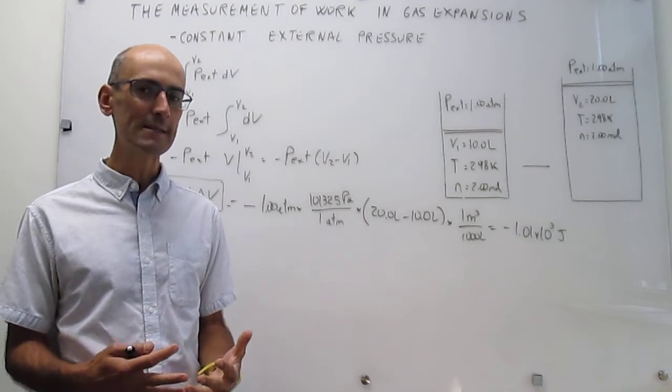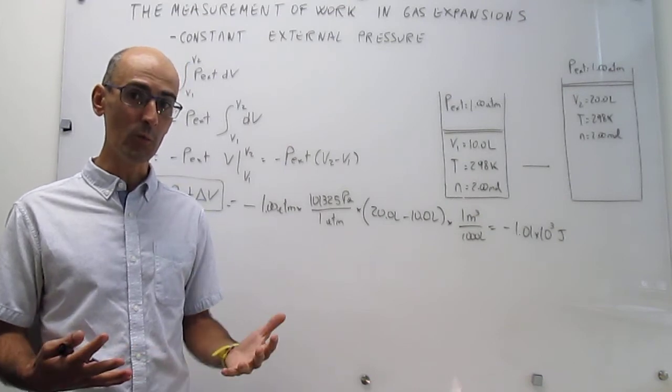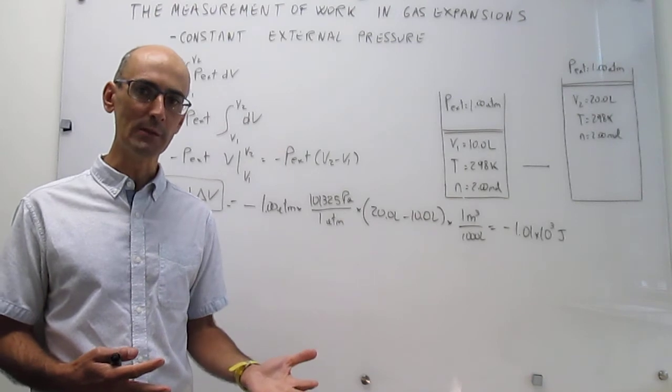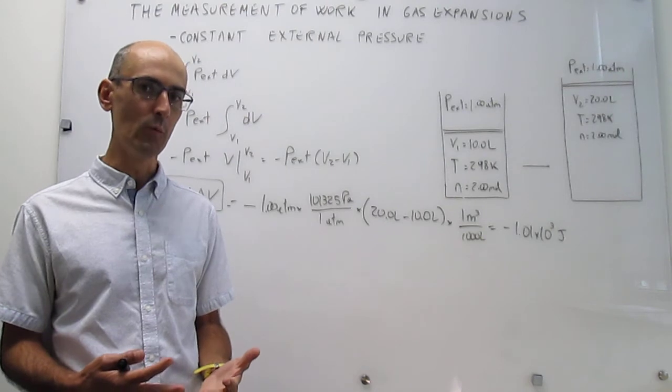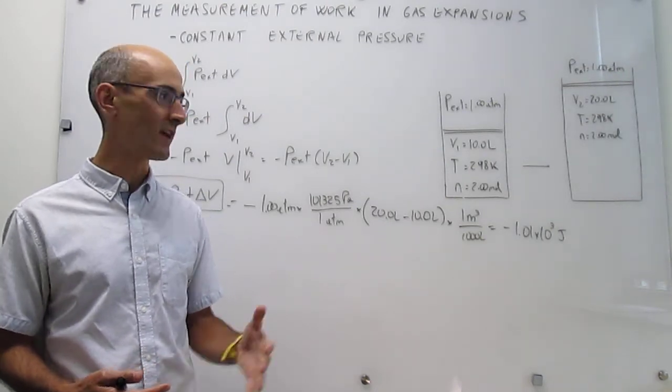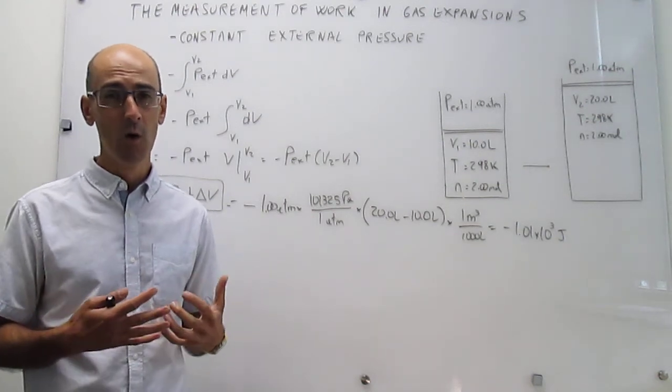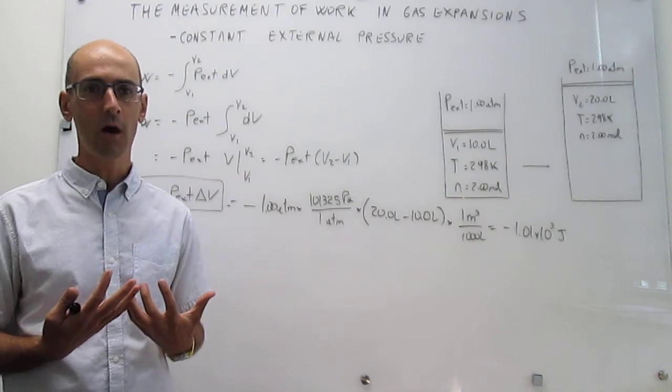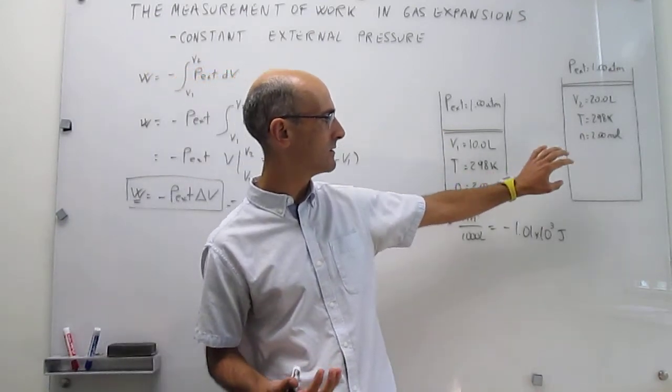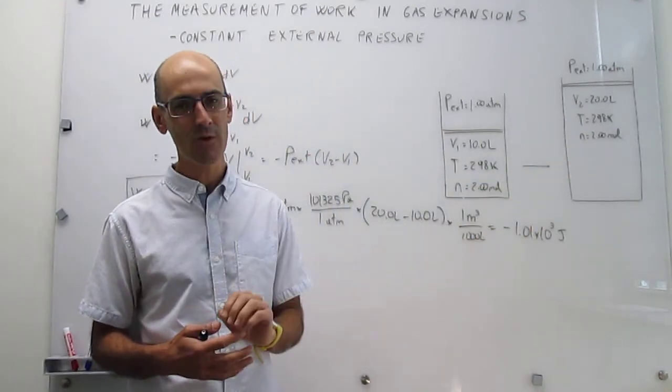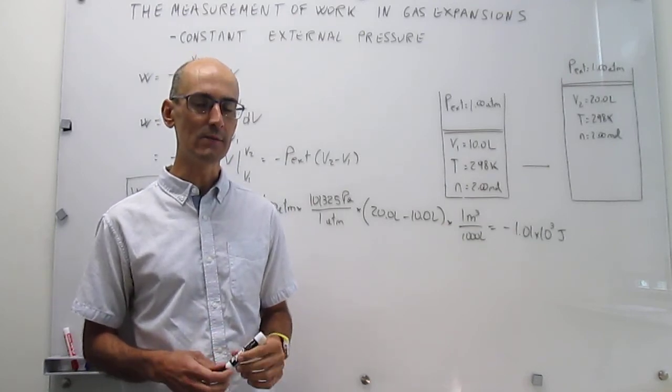However, work is something useful, and we like to extract as much of it as possible. So while working against a vacuum provides the lower limit for work, something more useful would be how can we extract maximum work. What is the maximum amount of work that you can extract from a gas expansion like this? What we're going to answer in the next video would be what procedure can you devise in order to take a gas from this set of initial conditions to that set of final conditions and extract the maximum amount of work. And that is going to be done in the next video.